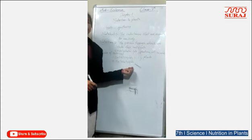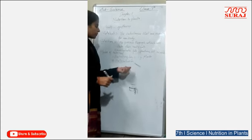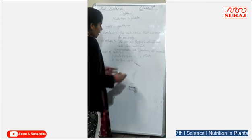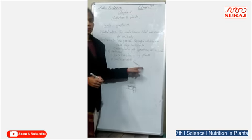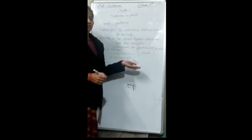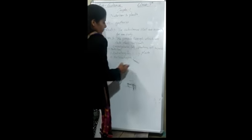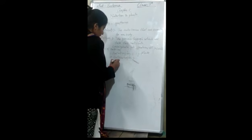Heterotrophic mode of Nutrition. In this case, organisms cannot prepare their own food. They depend on other sources for their food.